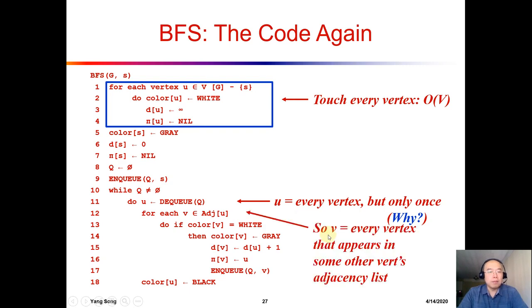So the next one, how about the v? So for the v, we will visit the v for every vertices that appears in some other vertices adjacency list. Because for the current node u, and then for each of the v in the adjacency list u, we want to visit the v, right? So the total number of the v we have to visit, what is it? If we are using the adjacency list, what is the total number of the v we have to touch?